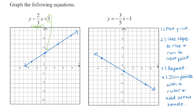Again, we recognize this is slope-intercept form. Start with a point — the y-intercept is negative one. We have a negative slope, so we're going down three and one, two, three, four, five to the right, or up three and five to the left. Make sure the slope is falling to the right because of that negative slope.